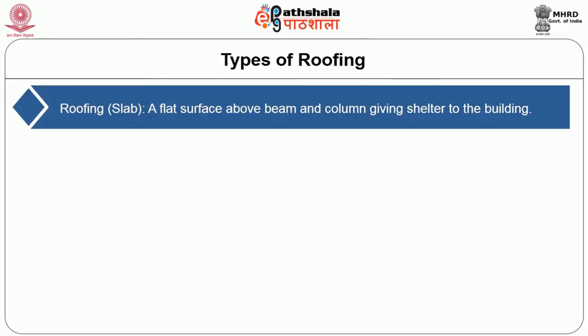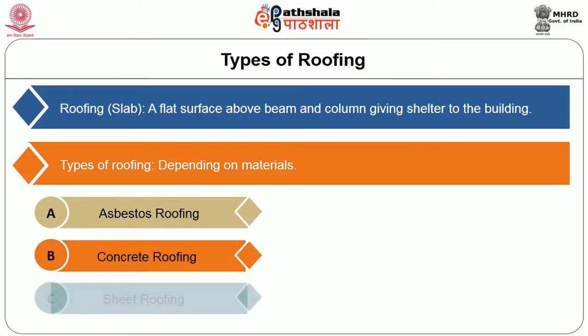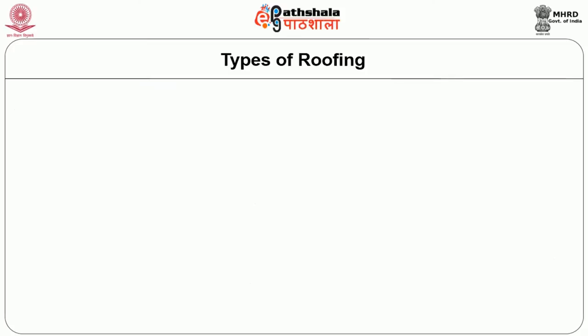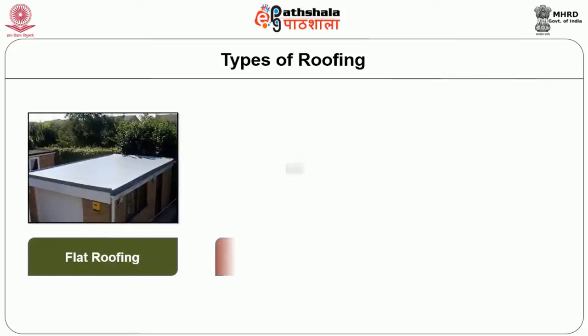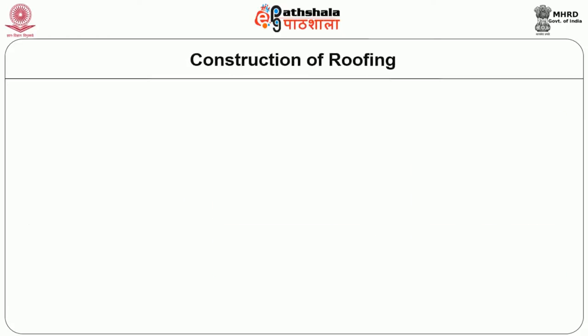Roofing is a flat surface above the beam and the column giving shelter to the building. There are many types of roofing. Depending on the material: asbestos roofing, concrete roofing, sheet roofing, truss roofing, tiled roofing and attached roofing. Depending upon the shape: flat roofing, sloped roofing and arch roofing. The type of roofing depends upon the customer's wish, the purpose of the building, and the budget.